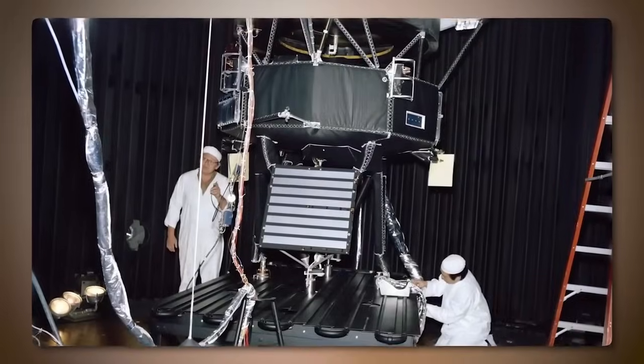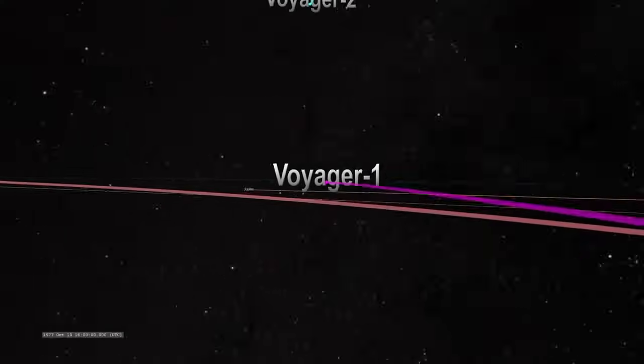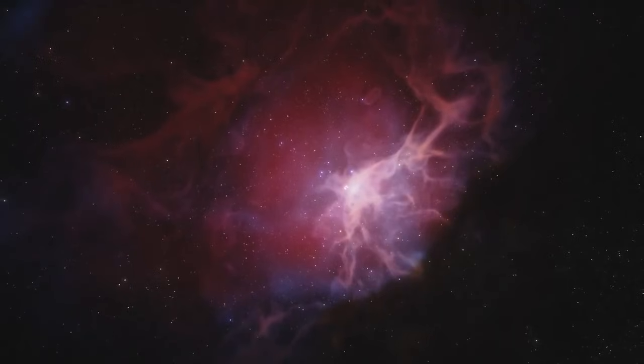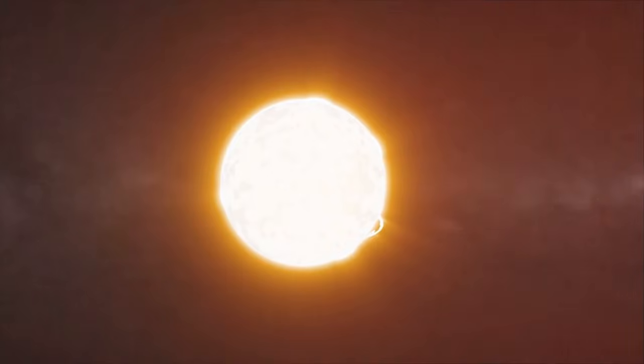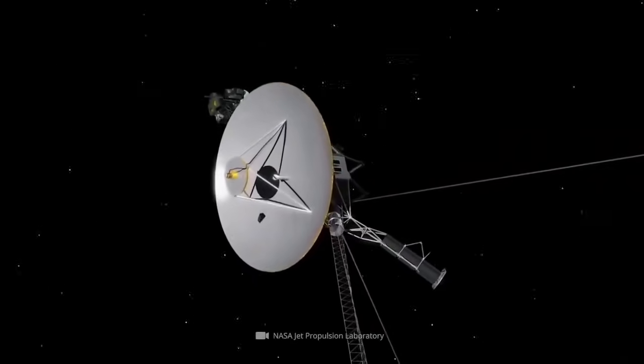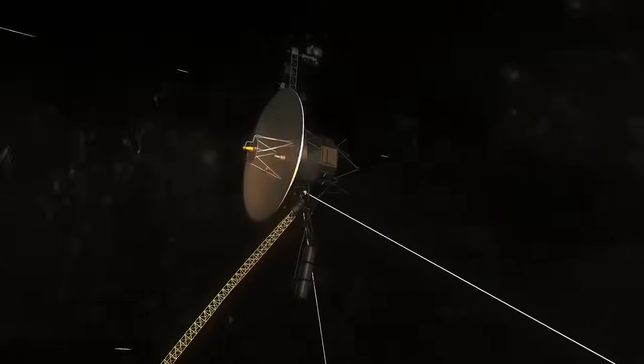When Voyager 2 flew by Uranus, it captured groundbreaking data, including the discovery of new moons and rings. However, its observations of the planet's magnetosphere, a protective magnetic bubble shielding Uranus from solar wind, were puzzling. The magnetosphere appeared unusually empty of plasma, leading scientists to believe Uranus had a magnetosphere fundamentally different from other planets in the solar system.